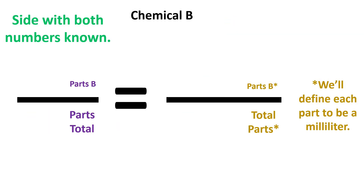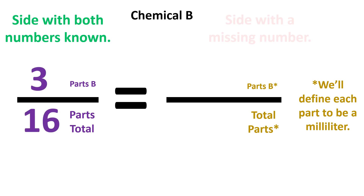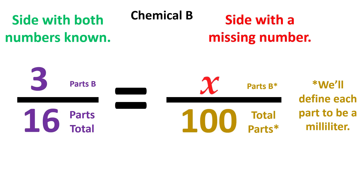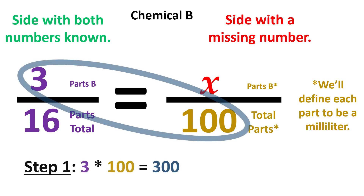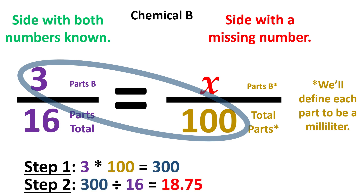For chemical B, the left side of the equal sign will be 3 over 16 and the right is X over 100. Step 1 is to multiply 3 and 100, which gives us 300. Step 2 is to divide our new product of 300 by the remaining number, which is 16. This equals 18.75 milliliters.